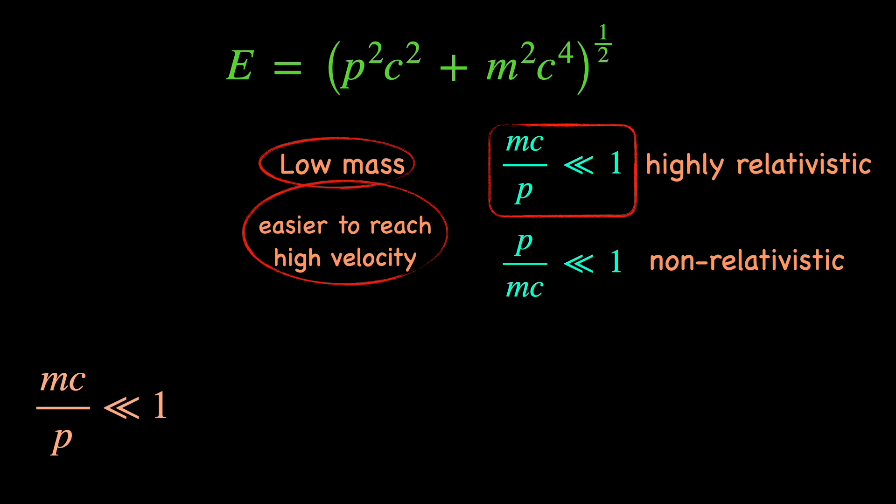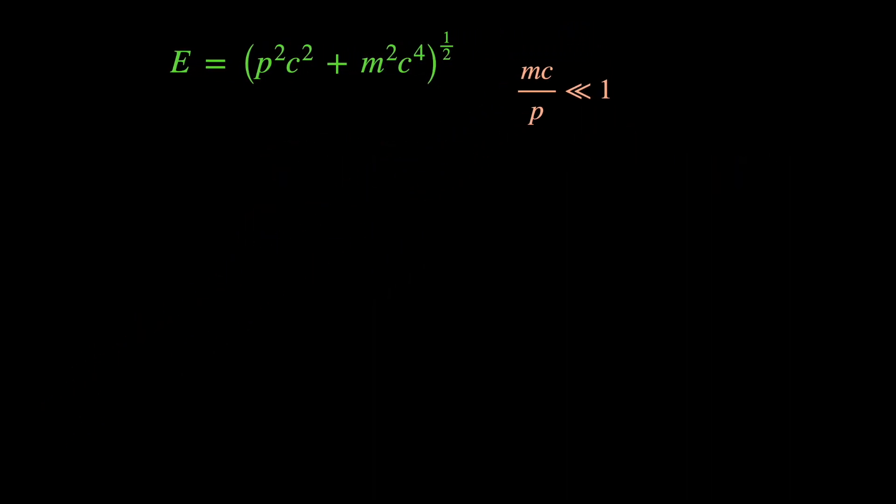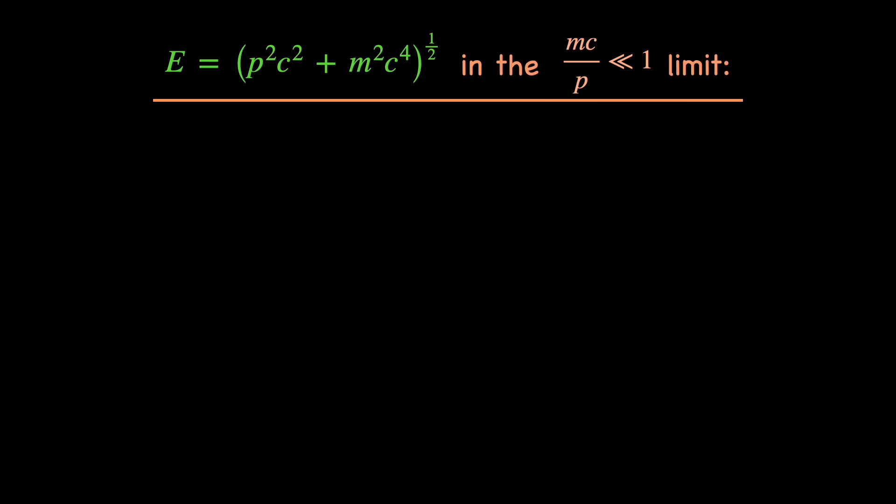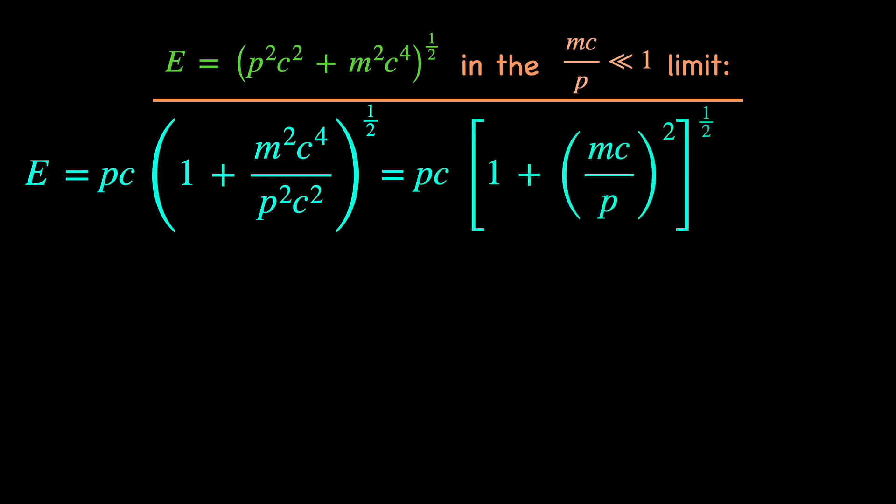Now, to implement this low mass limit in the dispersion relation, we take pc out of the square root and get 1 plus the square of this very small fraction mc upon p inside. Since it is square of a number already very small compared to 1, it can be dropped.